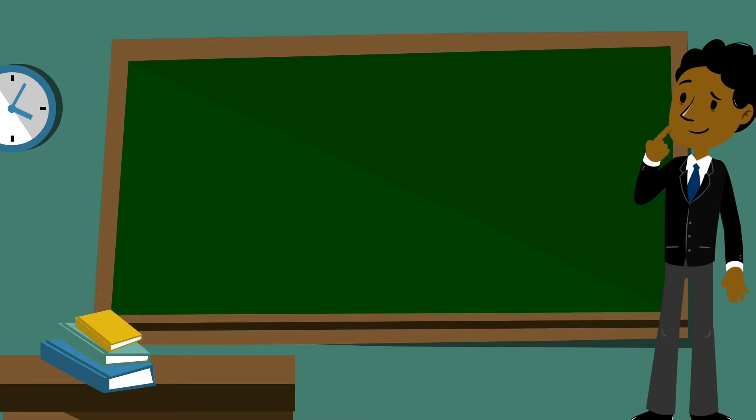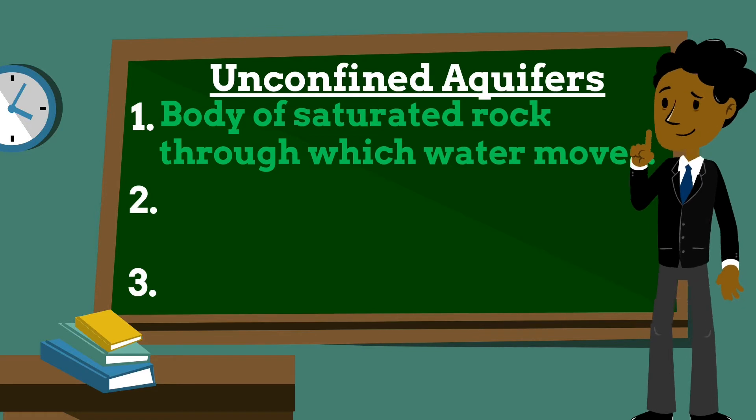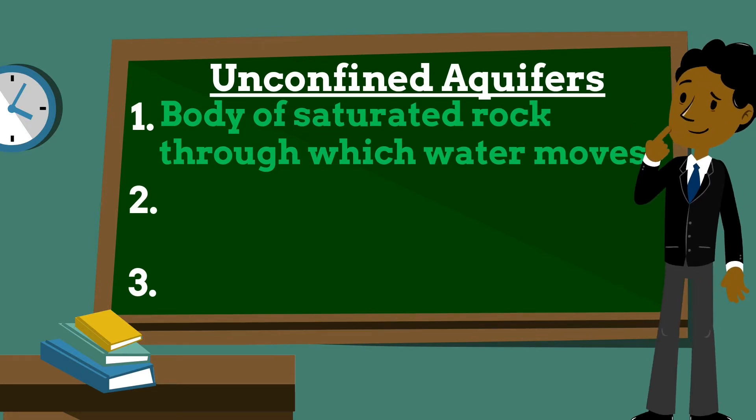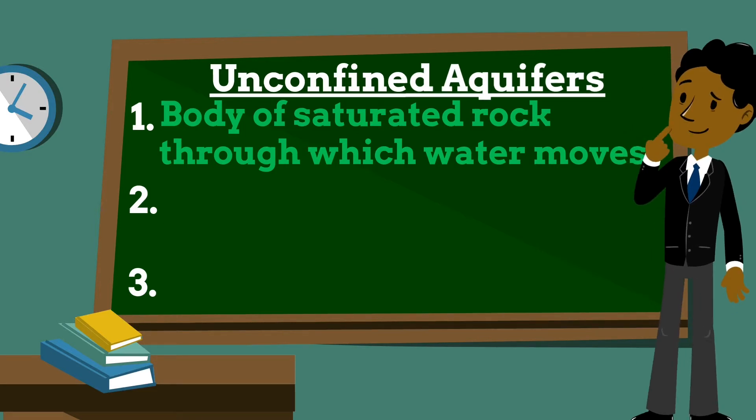Today we'll talk about unconfined aquifers. Another reminder from episode 18 is that an aquifer is a body of saturated rock through which water can easily move. Aquifers must both be permeable and porous and include such rock types as sandstone, conglomerate, fractured limestone and unconsolidated sand and gravel.